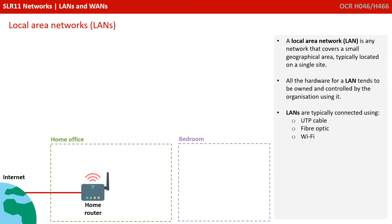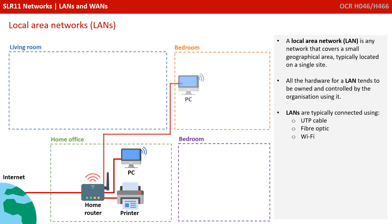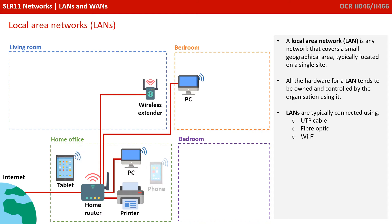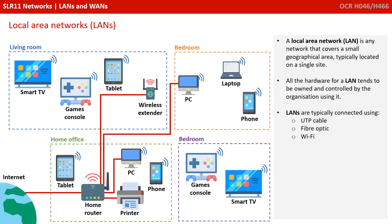A local area network is any network that covers a small geographical area, typically located on a single site. All the hardware for a LAN tends to be owned and controlled by the organisation using it. LANs are typically connected using UTP cable, fibre optic and Wi-Fi. Your home network and all the devices you have in it make up a local area network.